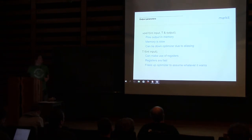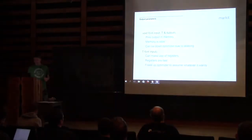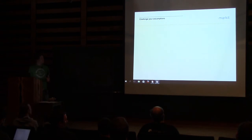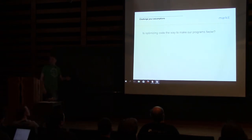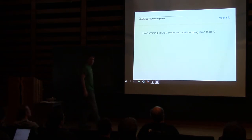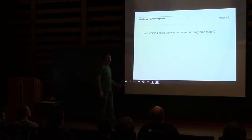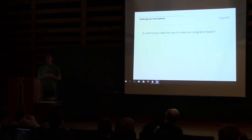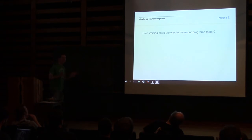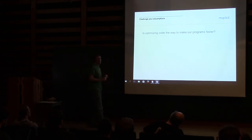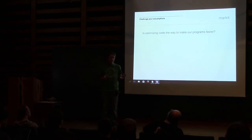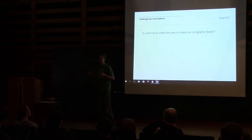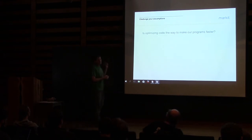Is optimizing code the way to make programs faster? Most people think: of course, optimize it and it runs faster. But that's maybe not always the best approach. We're all software engineers, we like to write code, so we think writing code will solve our problems — but sometimes that's not the right solution. You always want to ask: why is this problem happening, and what can I do to fix it?